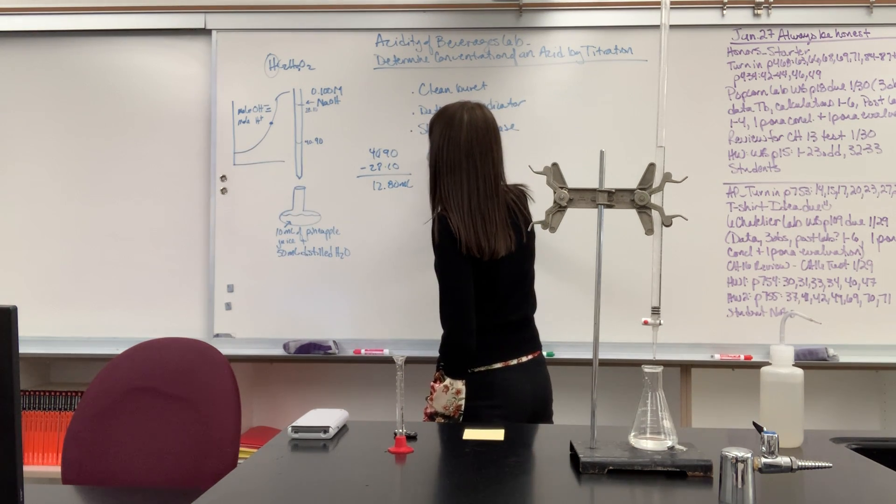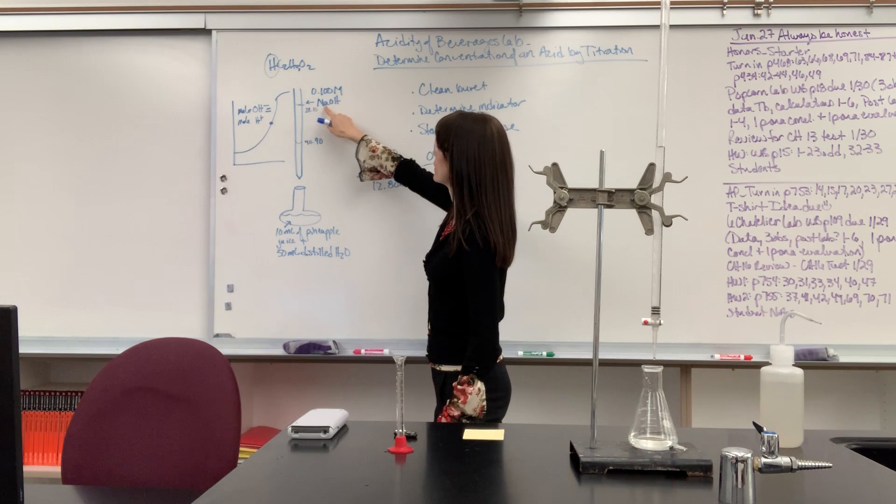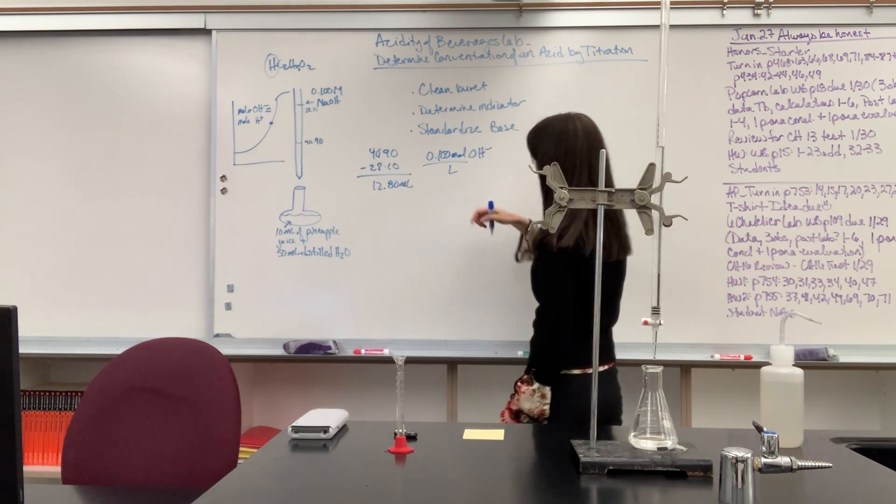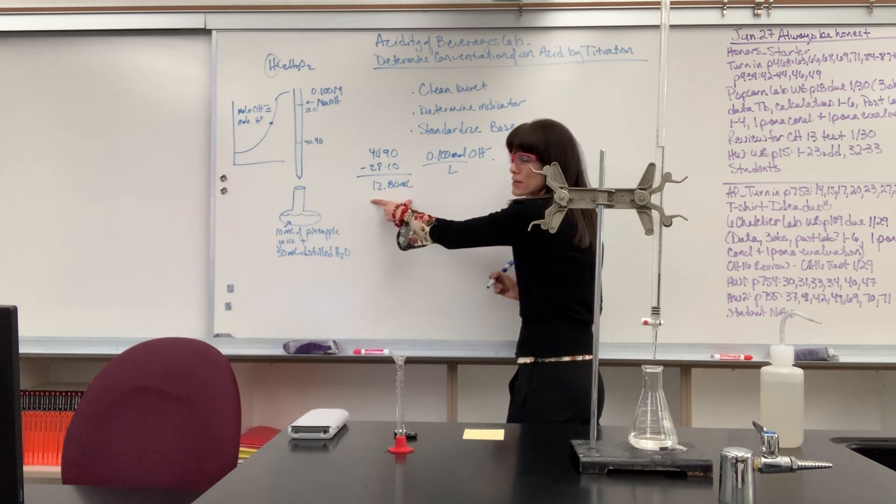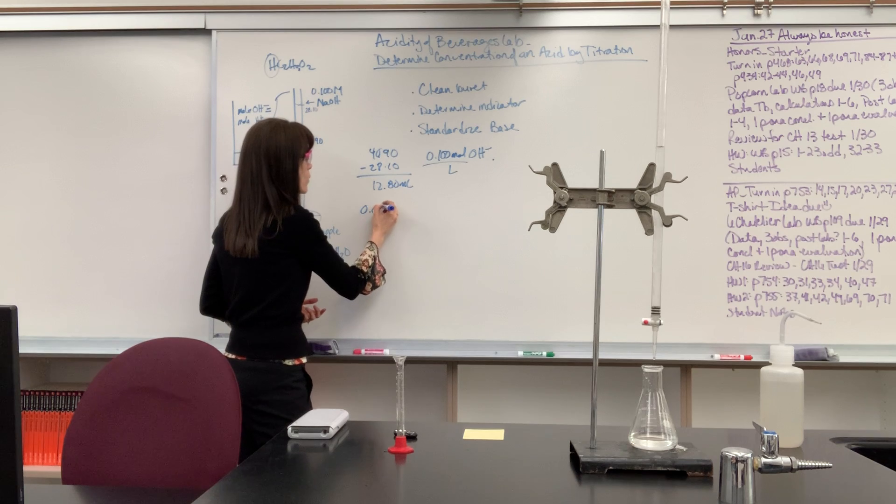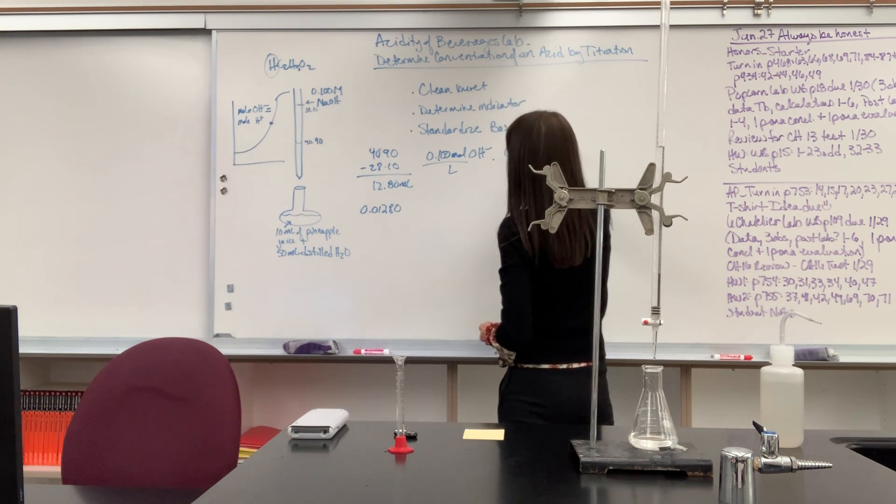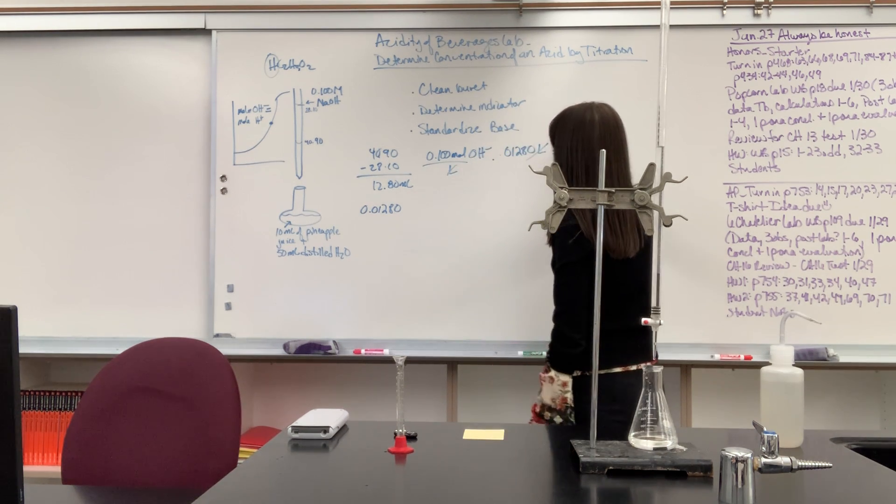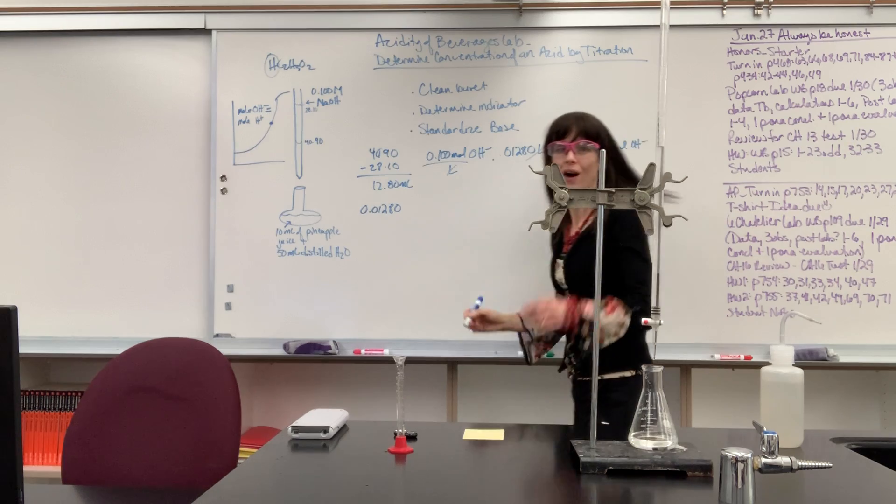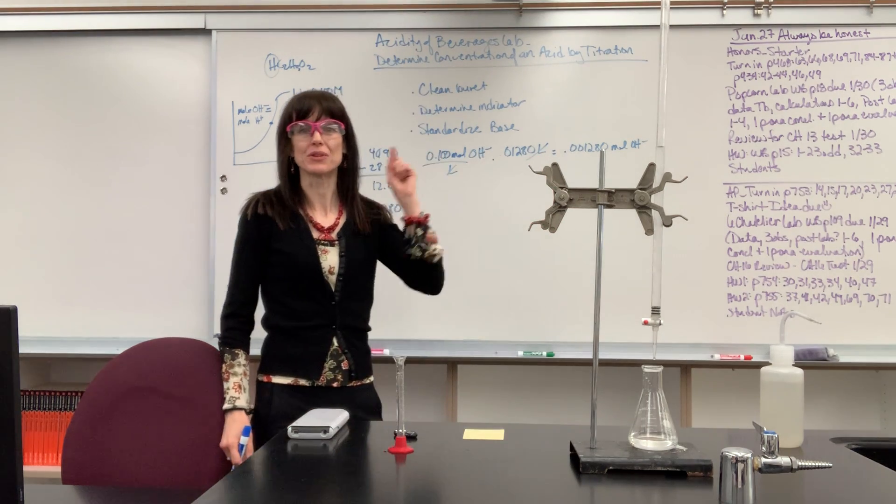Let's do this together. So I have 0.100 moles per liter of hydroxide. Well, a reminder, if it's 0.1 molar sodium hydroxide, it's a 1 to 1 molar ratio. That means it's 0.1 molar hydroxide. So there's my hydroxide. I'm going to multiply it by, convert this, just divide it by 1,000, convert that into liters and get 0.01280. So times by 0.01280 liters, liters cancel, that'll give me 0.001280 moles of hydroxide. So I know exactly how many moles of hydroxide we added into that. And I know that the moles of base equal the moles of the acid.